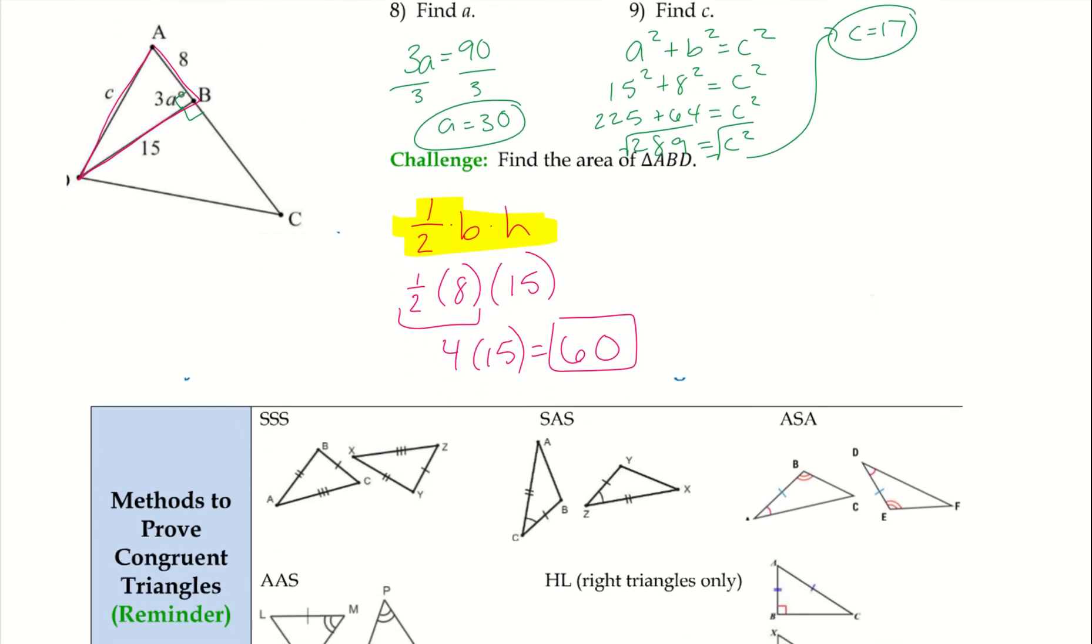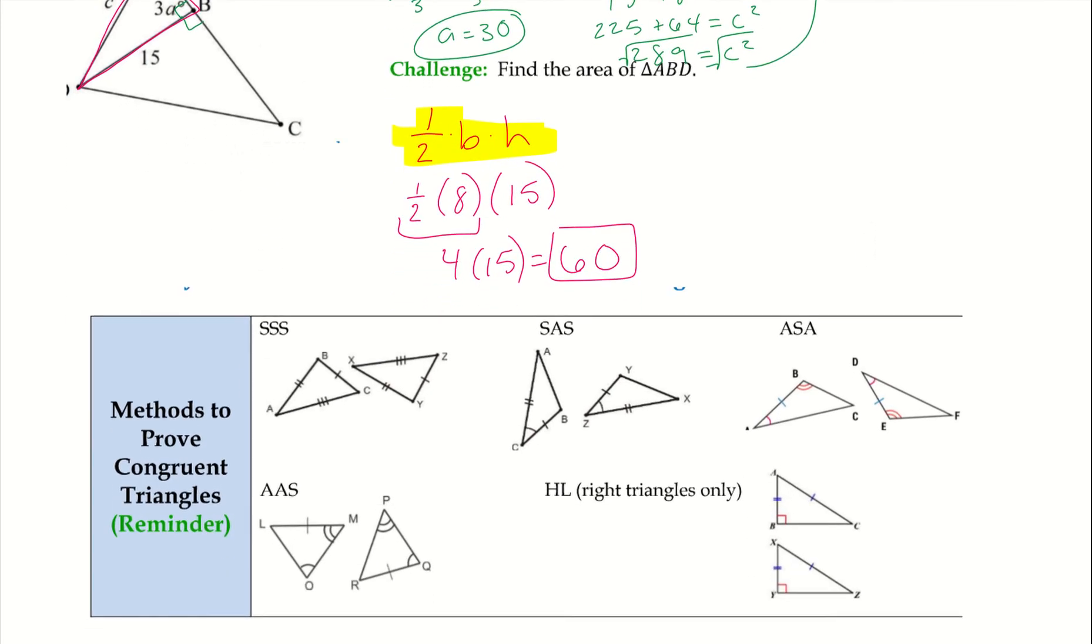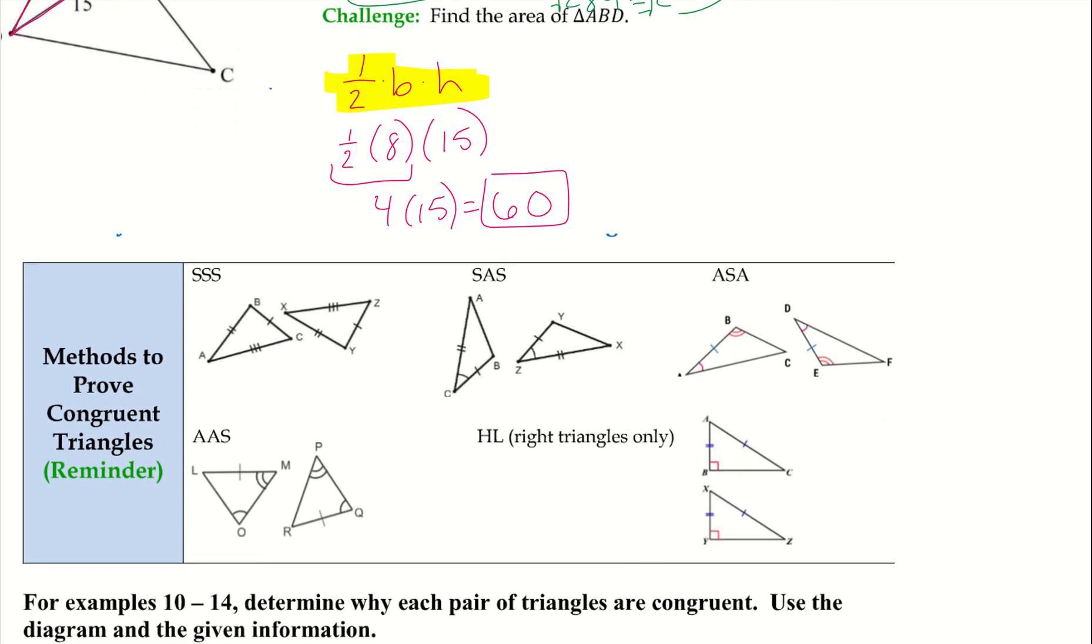Methods to prove congruent triangles. This is a reminder, we did this last semester. We had side-side-side, side-angle-side, angle-side-angle, angle-angle-side, and then hypotenuse leg, so right triangles only. Whenever we have this 90 degree angle, it doesn't hurt to check to see if we have hypotenuse leg. We might have something else, but if you do have a 90 degree angle, you might be using hypotenuse leg.